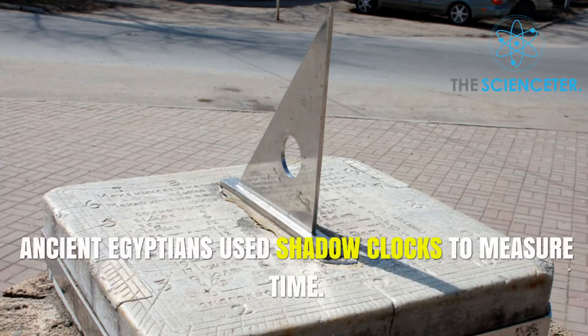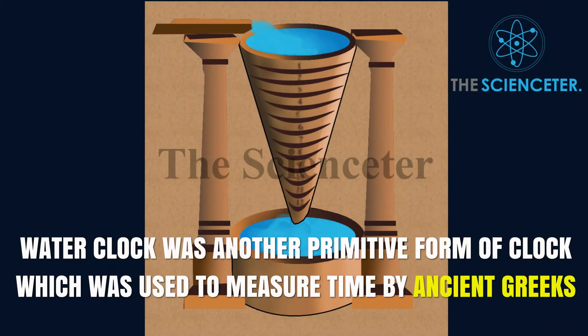Ancient Egyptians used shadow clocks to measure time. Water clock was another primitive form of clock which was used to measure time by ancient Greeks.